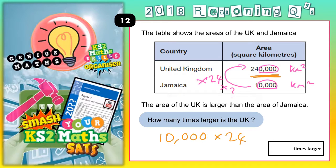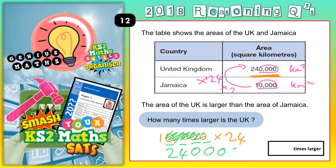So how would we actually do this? We would cover up the zeros and go 1 times 24, so that would be 24. And then we would put the zeros back on at the end. There are 1, 2, 3, 4 zeros, so we put 1, 2, 3, 4 zeros back on at the end.